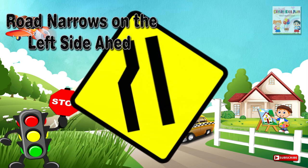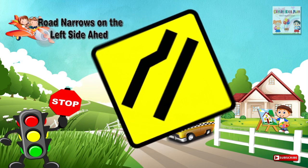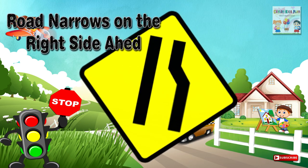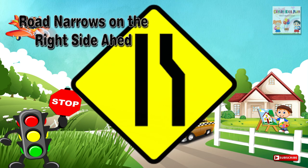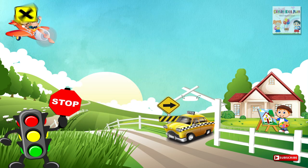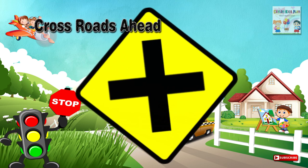Ten: Road narrows on the left side ahead — a place ahead where the road narrows on the left-hand side. Eleven: Road narrows on the right side ahead — a place ahead where the road narrows on the right-hand side. Twelve: Cross roads ahead — a junction ahead of two intersecting roads.